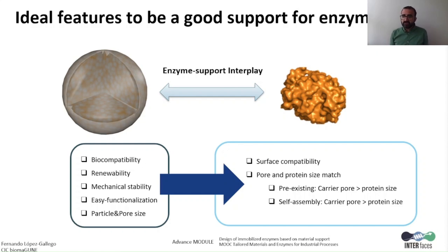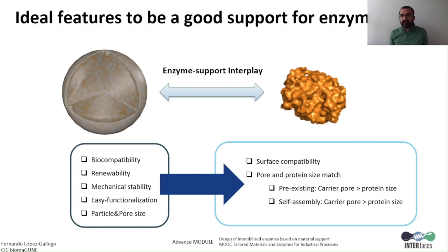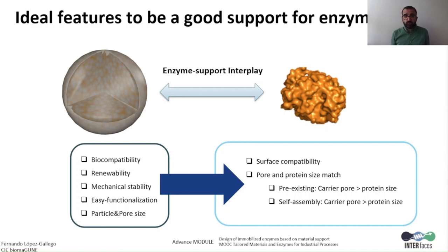For this reason, there are two important features to take into account when selecting materials: the porosity and the particle size of the material. These two properties are going to define the mass transport restrictions of our heterogeneous biocatalysts. More details about this issue are given in Lecture 2.3.1 of the advanced module.